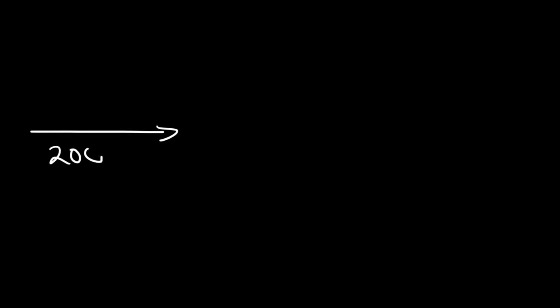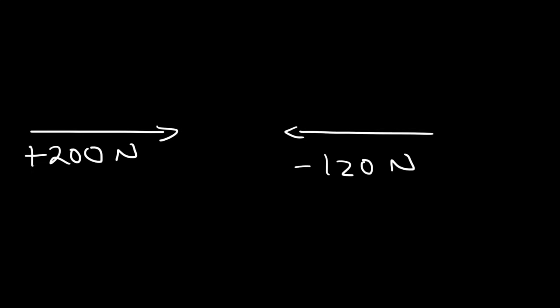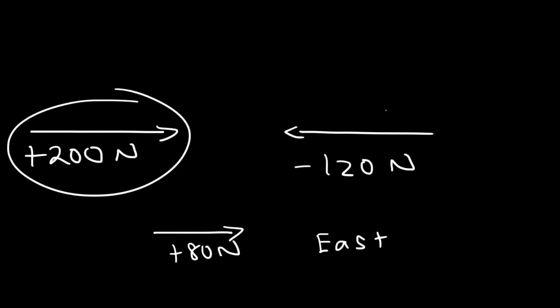Now let's say if we have a 200 N vector directed east and a 120 N vector directed west. What is the resultant vector? This is positive 200 because it's directed towards the right, and negative 120 because it's directed towards the left. If you add these two, you get a net force of positive 80 N, directed east because that vector is greater.